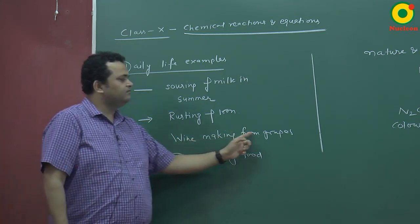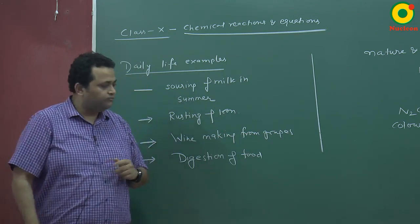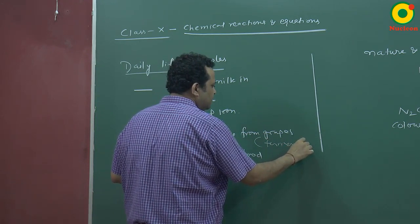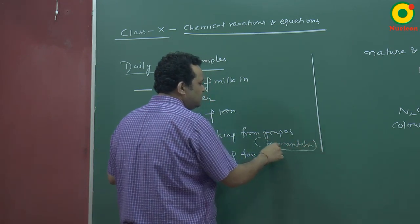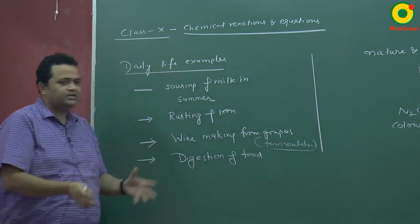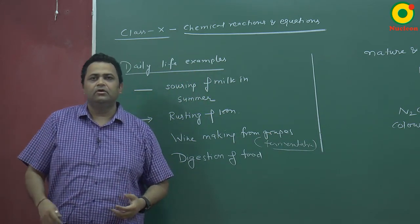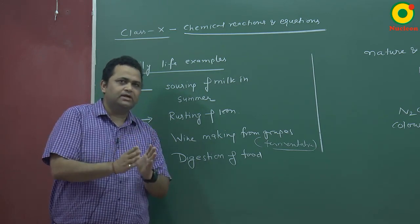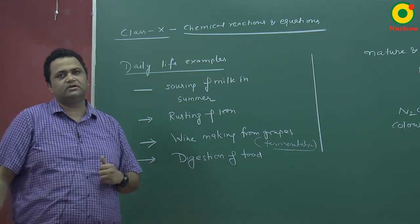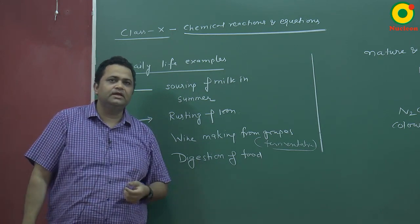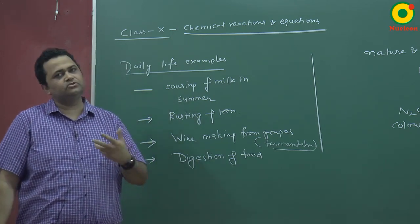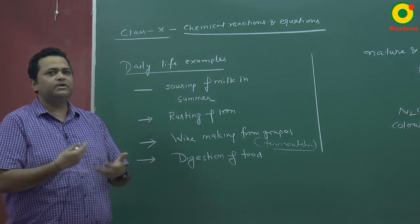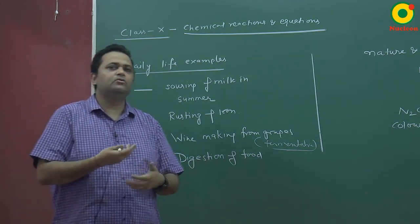In this category, we will talk about wine making from grapes. Fermentation is used in grapes — the grapes are crushed, kept for some days, bacteria act on them, and then alcohol is formed. Similarly, if we keep cane sugar for some days, fermentation will start and alcohol is produced.